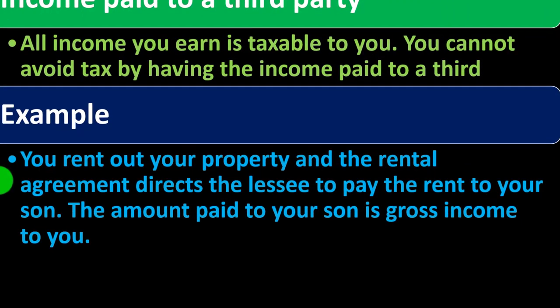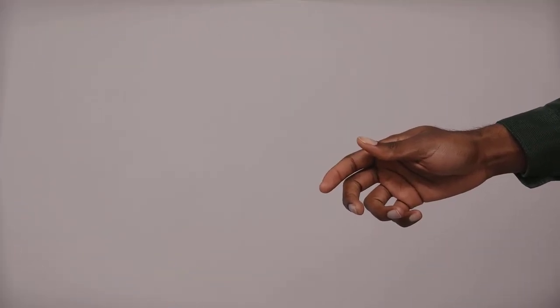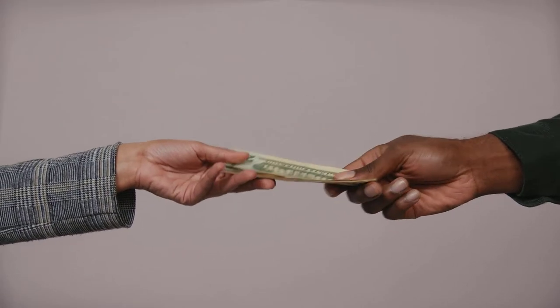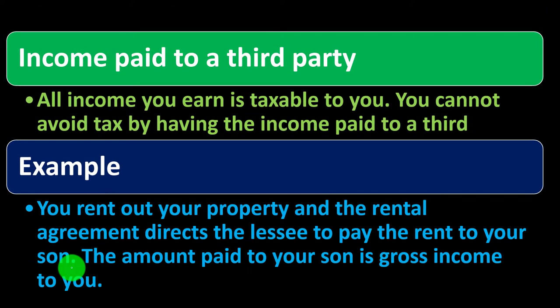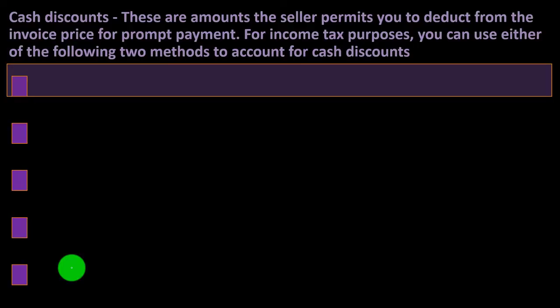For example, you rent out your property and the rental agreement directs the lessee to pay the rent to your son. The amount paid to your son is gross income to you, because it's your property. Related-party transactions are an area where the IRS will be skeptical, since those transactions don't reflect what would happen between unrelated, arm's-length individuals in the market.